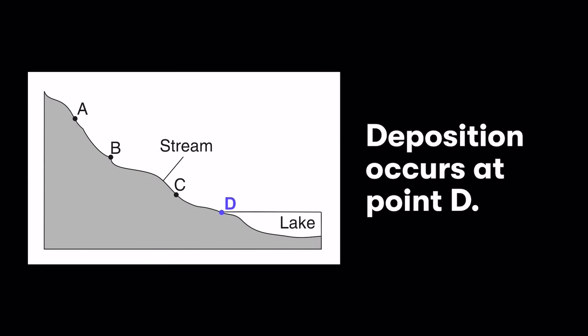Here we have a cross-section of a river flowing fast down a slope, but then it hits the lake and slows down. Because it slows down right there, it can't carry the sediment anymore, so we see lots of deposition. Think of it like a water slide — you go faster and faster down the slide, then hit the pool at the end and your body stops because you've entered a larger body of water. The same happens in a river — the sediment the river is carrying gets dropped off.